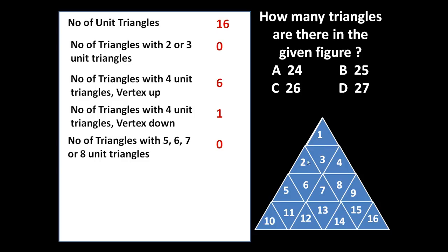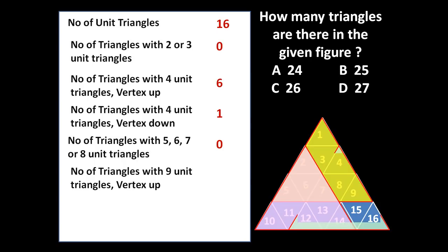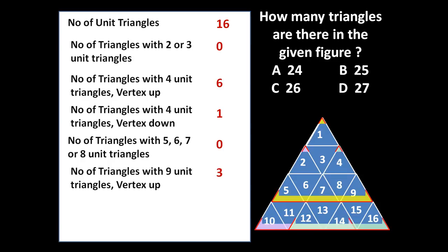But if we take nine small triangles together, a triangle can be formed. So the number of triangles with nine unit triangles taken together — vertex up — counting: one, two, and three. Three such triangles are possible if we take nine unit triangles together. After nine, you cannot form any triangle taking ten, eleven, twelve, thirteen, fourteen, or fifteen triangles together.